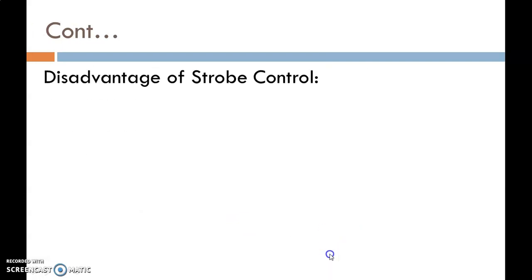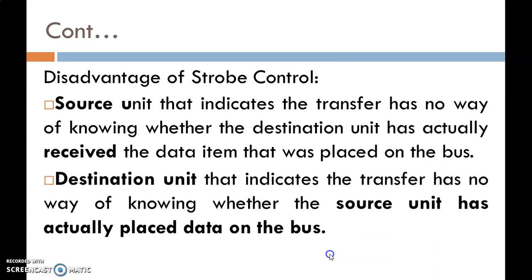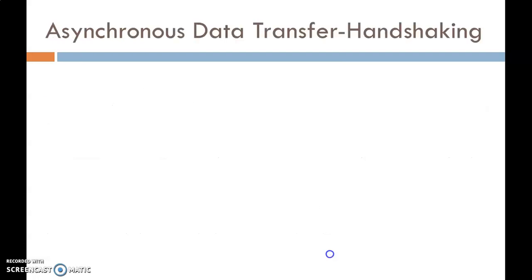There are two disadvantages of the Strobe Control method. First, for source-initiated data transfer, the source unit has no way of knowing whether the destination unit has actually received the data placed on the bus. Second, for destination-initiated transfer, the destination unit has no way of knowing whether the source unit actually placed the data on the data bus. To overcome these two disadvantages, a new method is introduced: Handshaking.